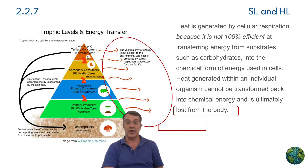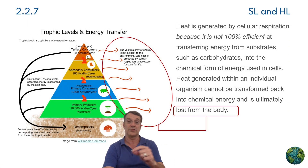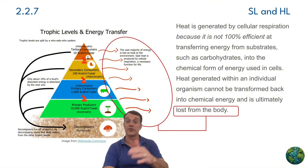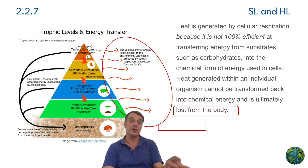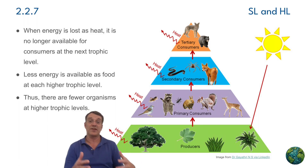Throughout these trophic transfers, there are inevitable energy losses. At each step, some energy is lost as heat through cellular respiration, some is not consumed or digested, and some energy goes into movement and other life processes. This inefficiency in energy transfer is a fundamental principle that shapes ecosystem structure and function.